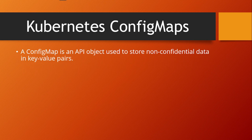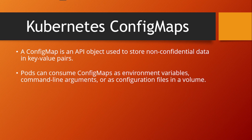In simple terms, a ConfigMap is an API object used to store non-confidential data in key-value pairs. That's the main objective of a ConfigMap. ConfigMaps can be used in pods as environment variables, command-line arguments, or configuration files in a volume.